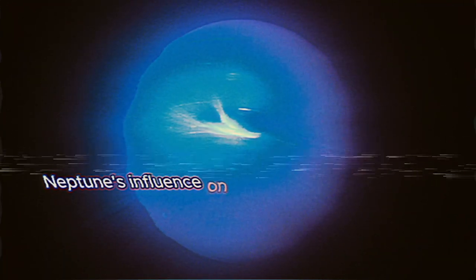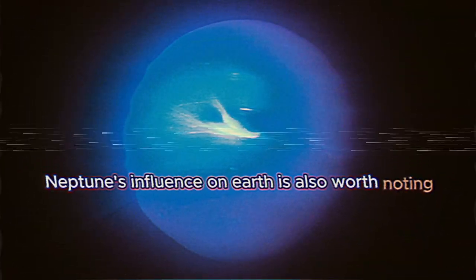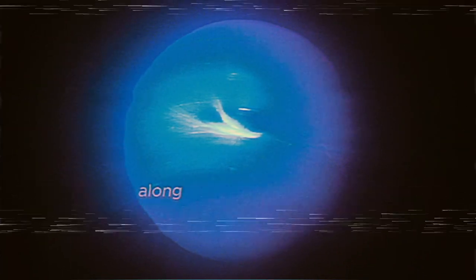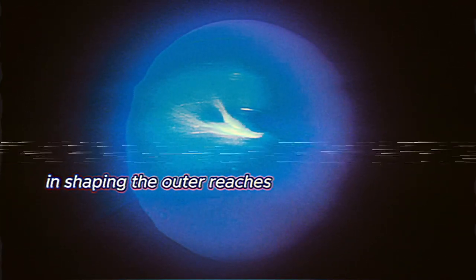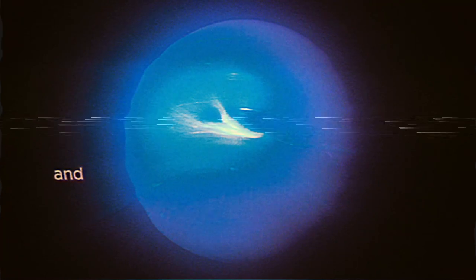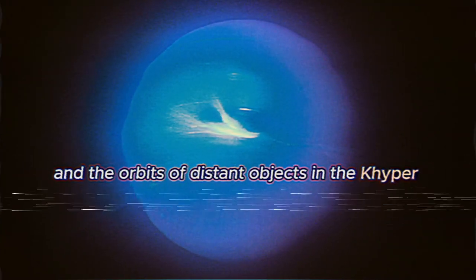Neptune's influence on Earth is also worth noting. Its gravitational pull, along with that of Uranus, is believed to have played a role in shaping the outer reaches of the solar system and the orbits of distant objects in the Kuiper belt.